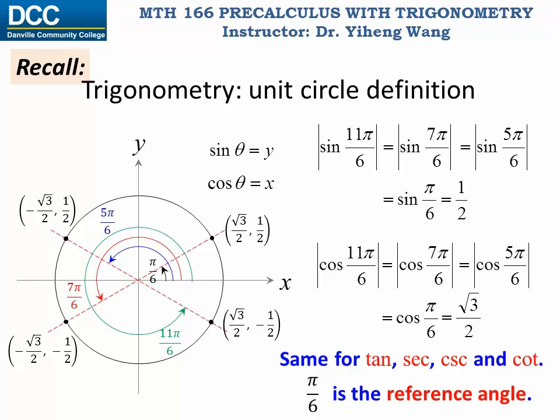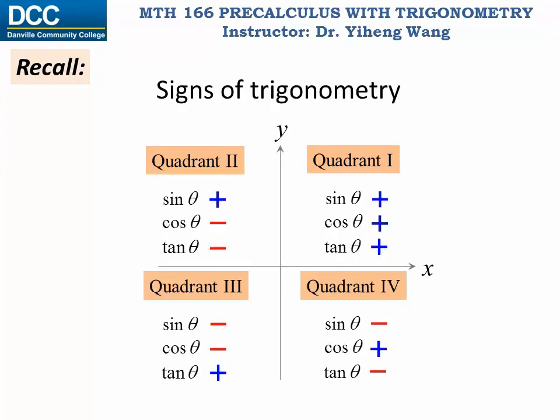How do we know when to add the negative sign in front of the function value? Well, we learned that already. We can tell if the trigonometric function value is positive or negative based on what quadrant the terminal side of the angle falls into.